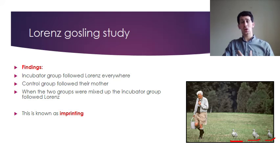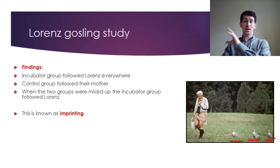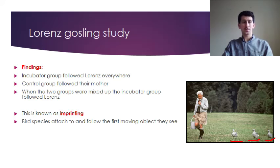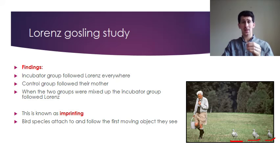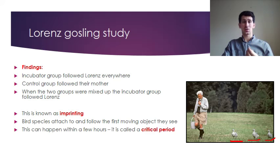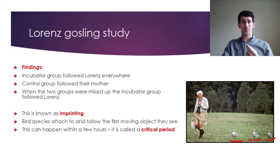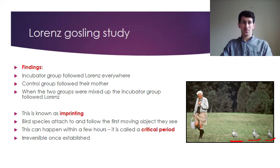Lorenz termed this process imprinting — Lorenz had imprinted on the goslings born with him, and the mother had imprinted on her goslings. Many bird species attach to the first moving object they see. Lorenz found this happens within 12 to 17 hours of birth, which is called the critical period. The first moving thing seen within that window is what they imprint and attach to.